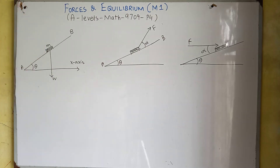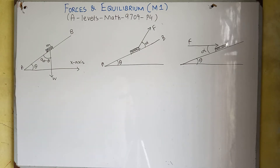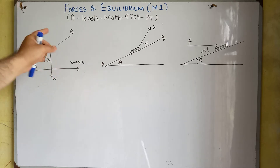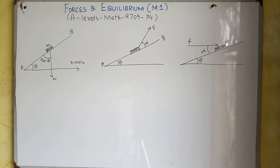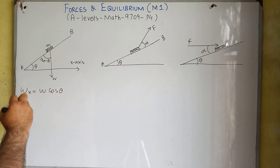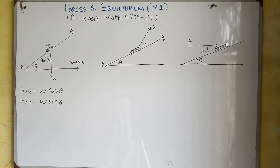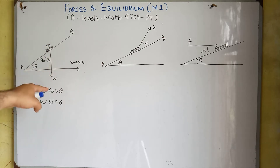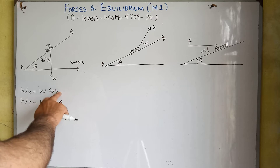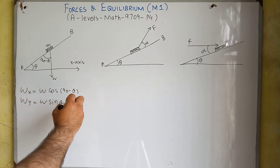First of all, we can see that weight is always downward, and we can see that this angle is 90 minus theta. This force W is making an angle 90 minus theta with this surface AB. We know that the x-component of any force is cos theta and the vertical component is sin theta, as done in our last video on resolution of forces. But in this scenario, force W is making an angle 90 minus theta, so we will use 90 minus theta.